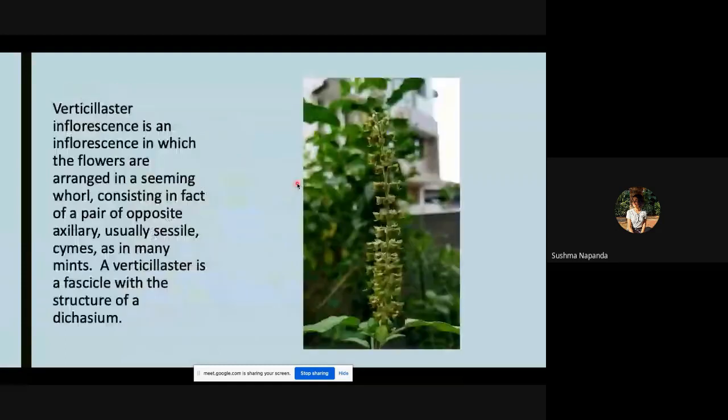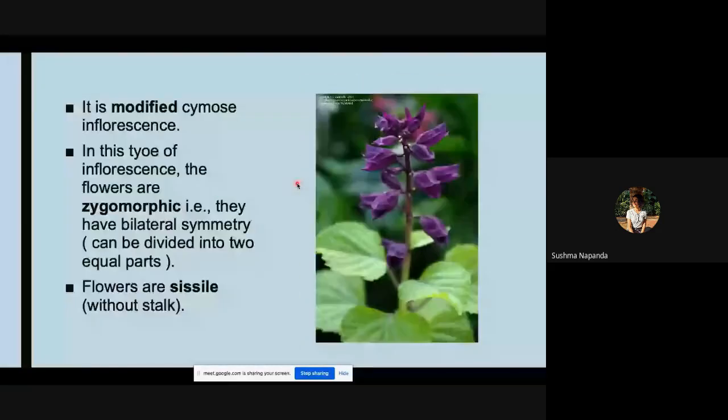Verticillaster inflorescence is a modified cymose inflorescence. Cymose inflorescence we discussed earlier. In this type of inflorescence the flowers are zygomorphic, that is they have bilateral symmetry. They can be divided into two equal parts.